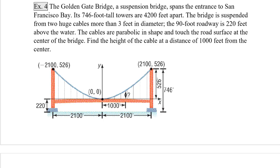Example 4. The Golden Gate Bridge, a suspension bridge, spans the entrance to San Francisco Bay. Its 746 foot tall towers are 4200 feet apart. The bridge is suspended from two huge cables more than 3 feet in diameter. The 90 foot roadway is 220 feet above the water. The cables are parabolic in shape and touch the road surface at the center of the bridge. Find the height of the cable at a distance of 1000 feet from the center. So they gave us a lot of information in this problem, and some of it is useful and some of it is not. We're lucky that we've been provided with a picture. So you can see that we have our towers that are 4200 feet apart. They also tell us that the roadway is 220 feet above the water. So when the towers are 746 foot tall, they're really only 526 feet higher than the roadway. They want us to find the height of the cable at a distance of 1000 feet from the center, which is right around here.